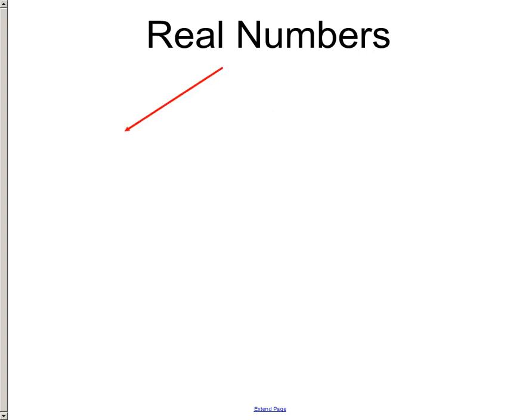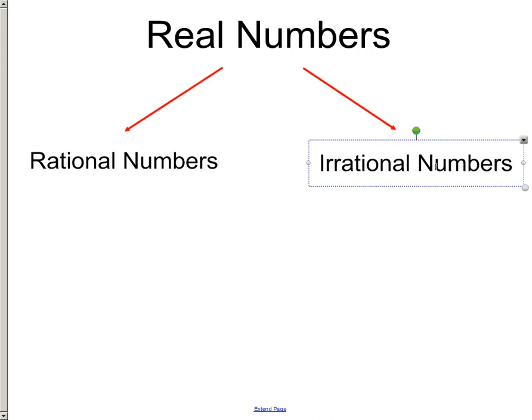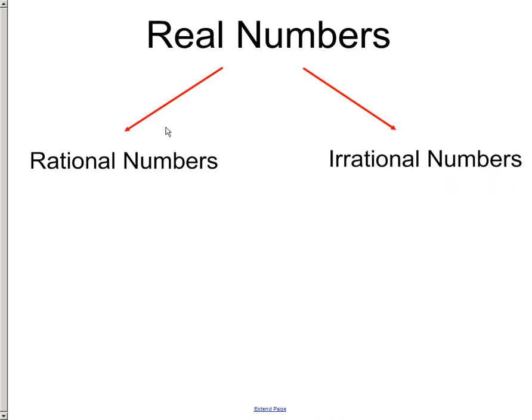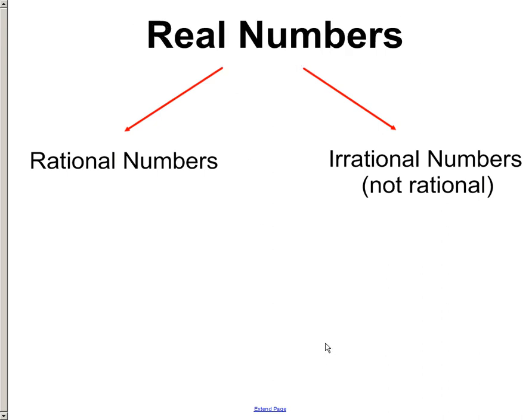There's one category off here to the left that's called rational numbers. But then there's a second category that we'll send off to the right side here that we just call irrational. And it's basically this: it's either rational or it's not rational. And these two groups together make up what we call the real numbers.